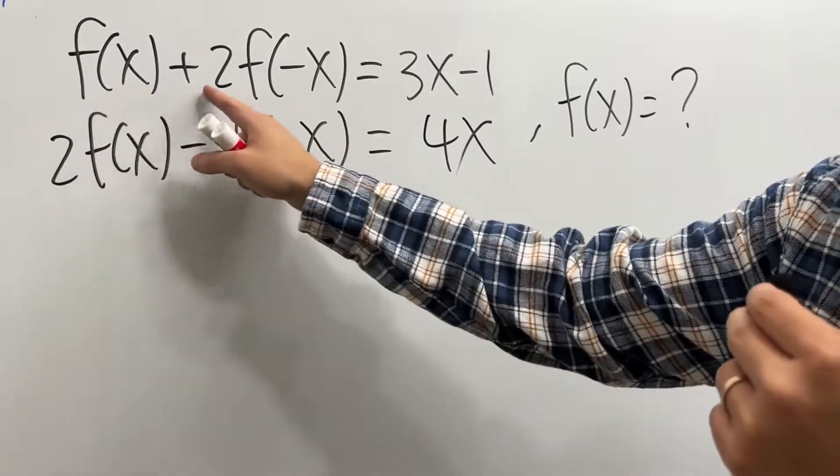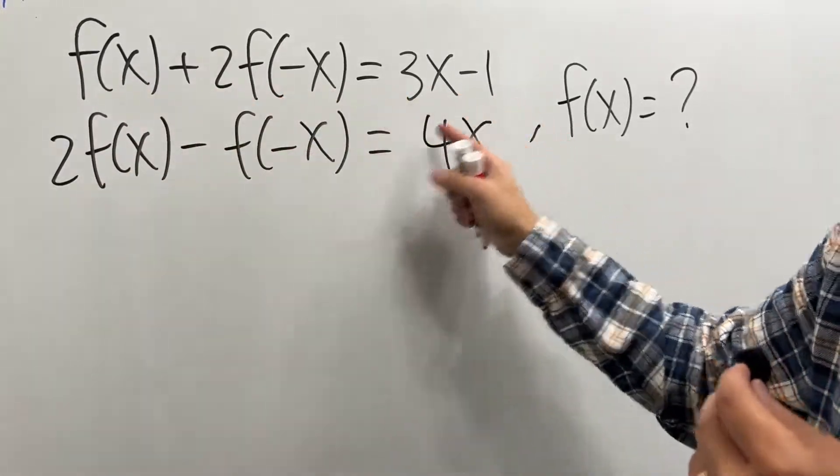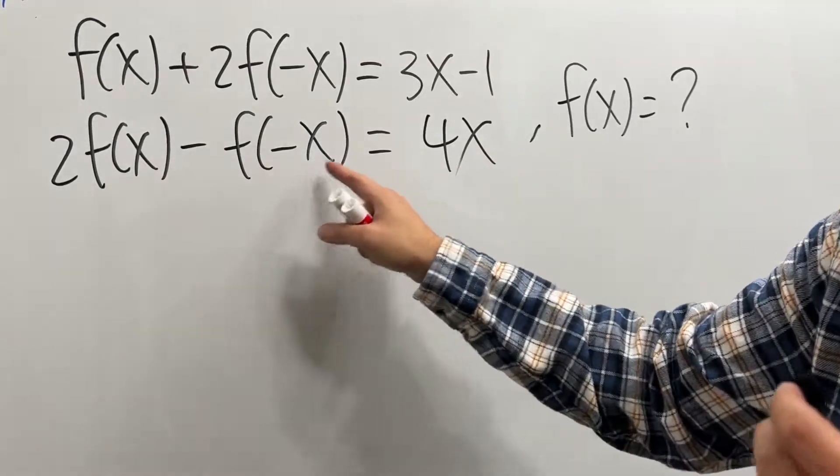Okay, an easy functional equation. We have f(x) + 2f(-x) = 3x - 1, and 2f(x) - f(-x) = 4x.